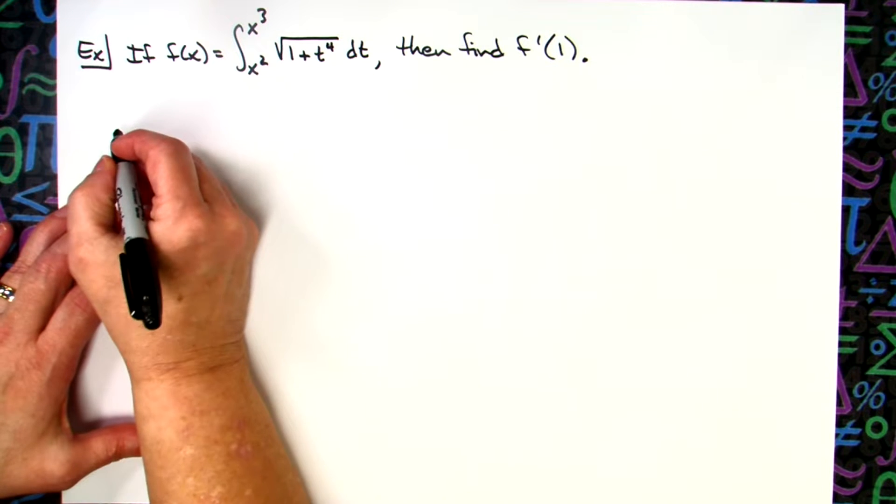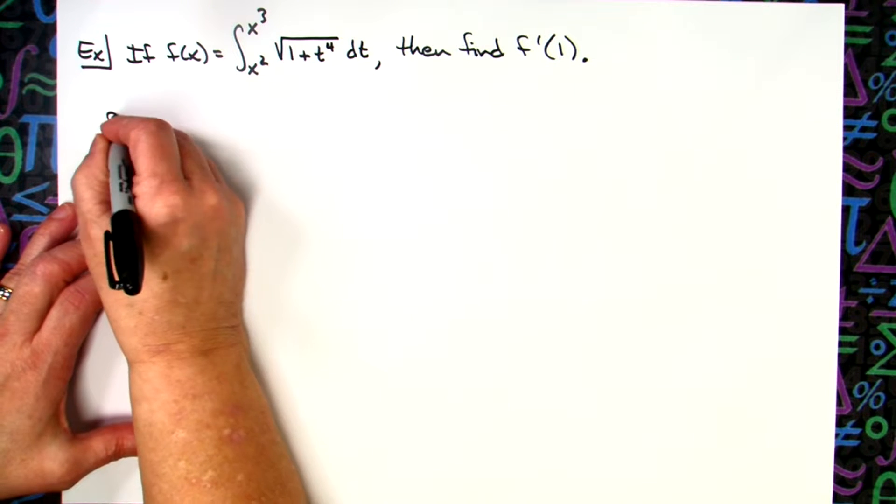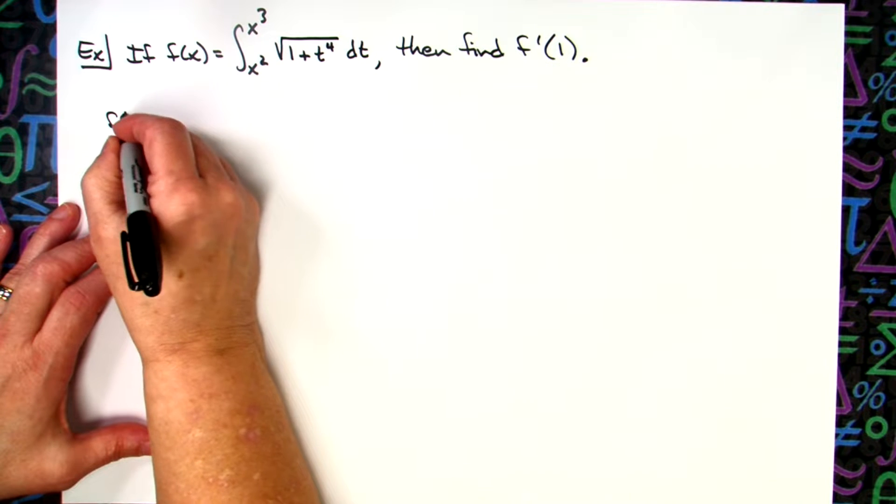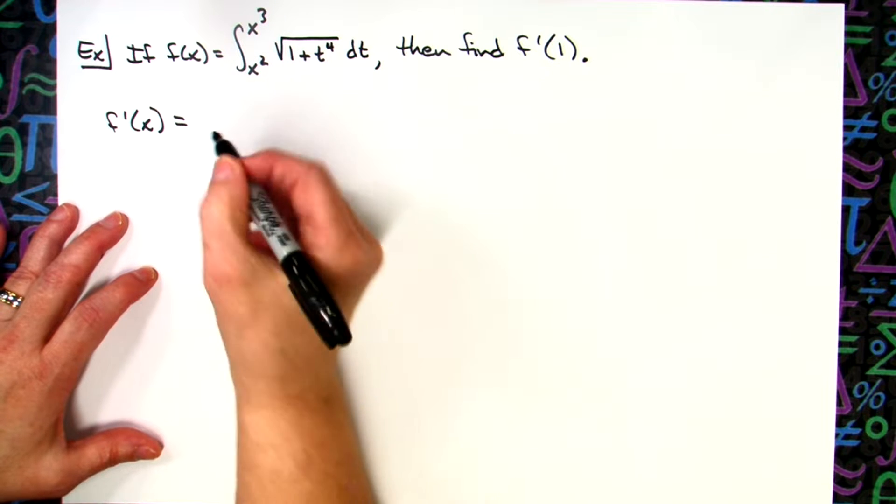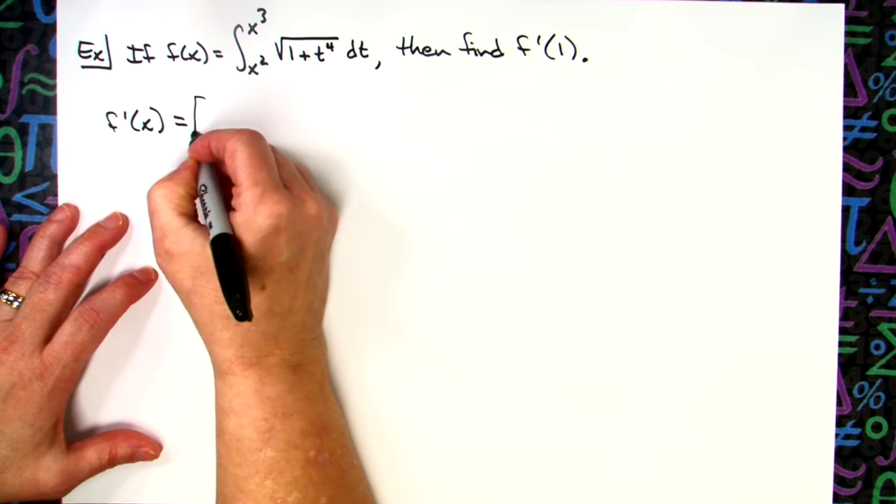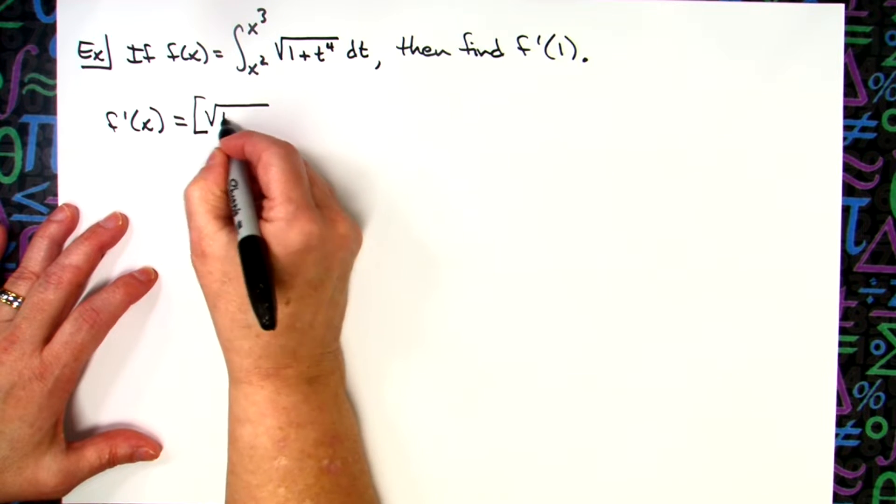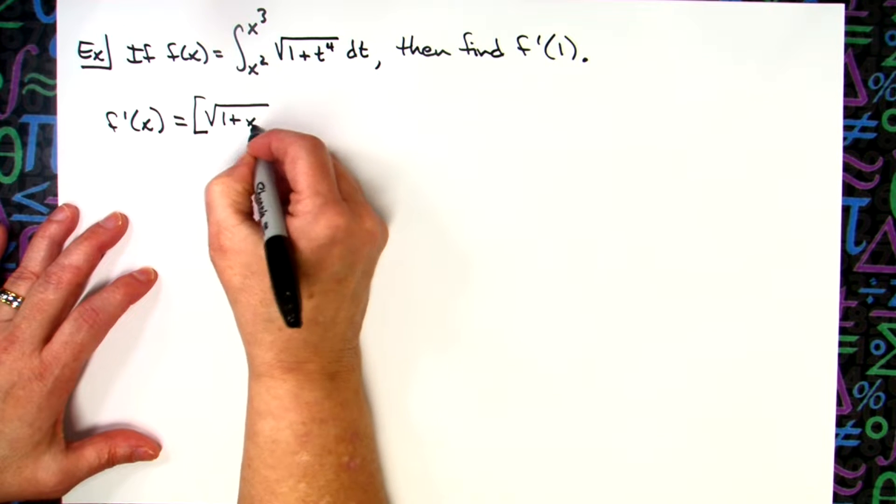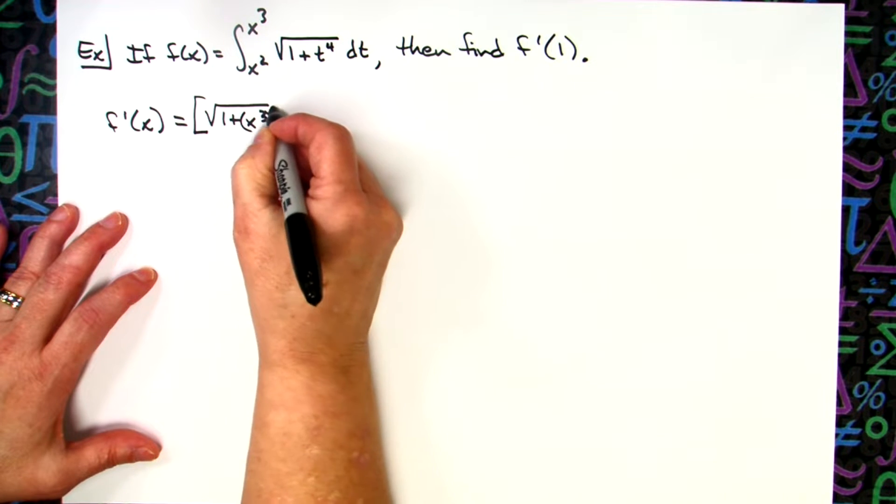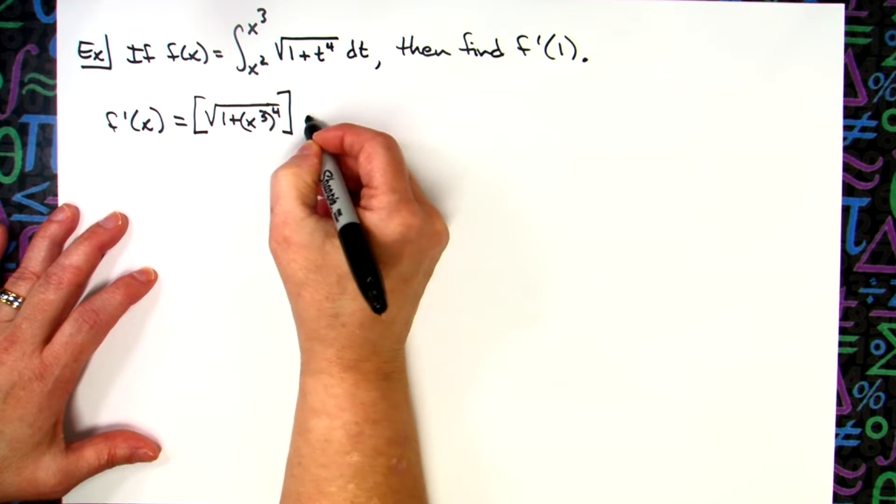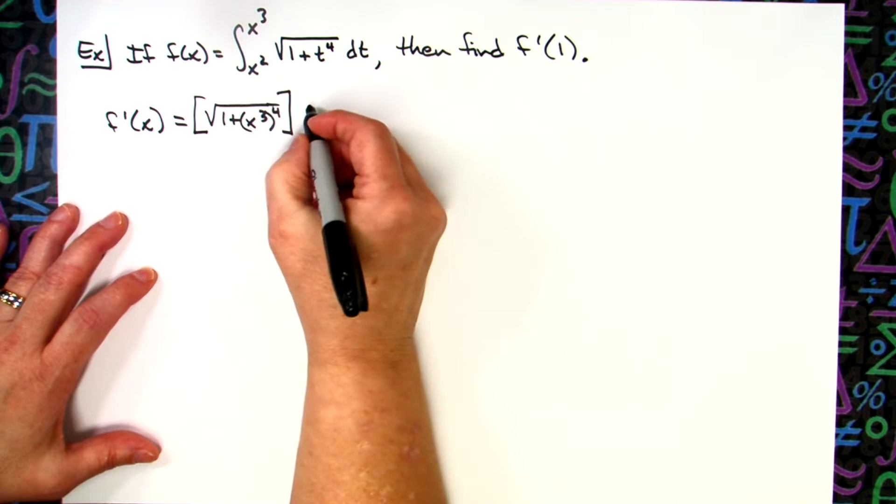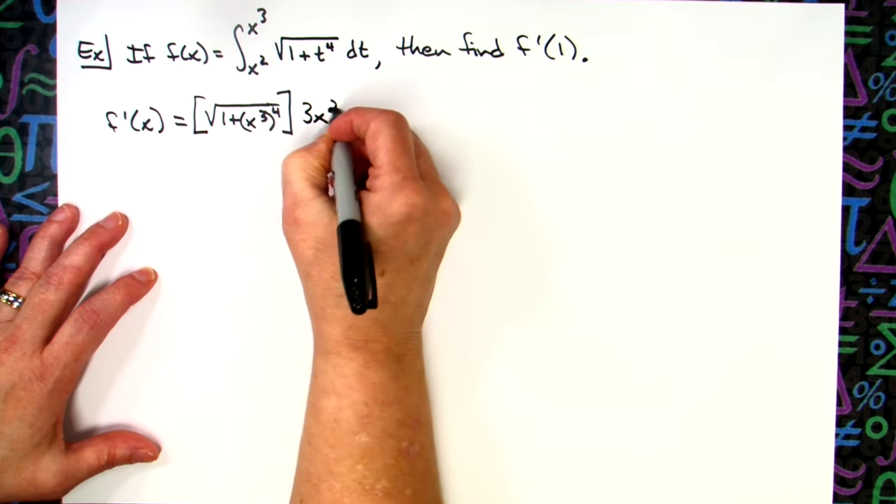Let's first start out with just finding that derivative. So lowercase f prime of x. Same process. We're going to take that upper limit and plug it into the function. So I'm going to have the square root of 1 plus x to the third raised to the fourth power, and then times the derivative of that upper limit.